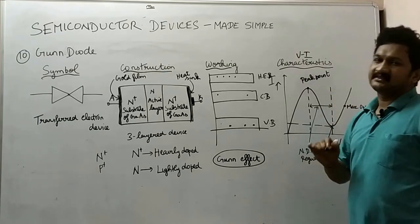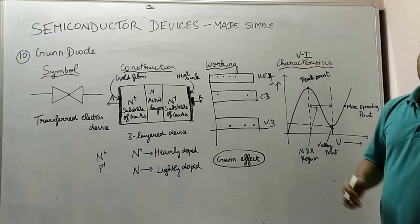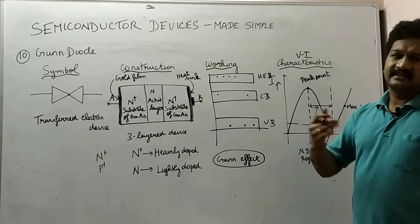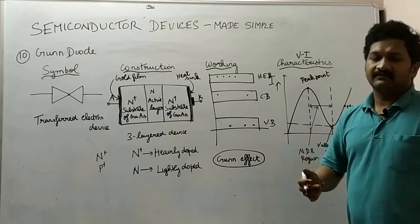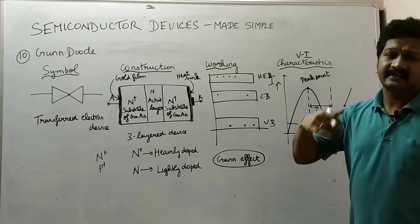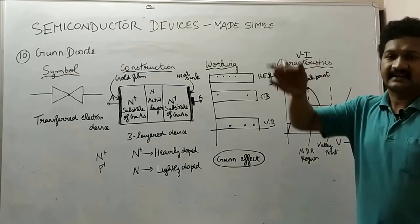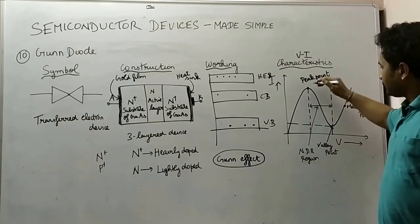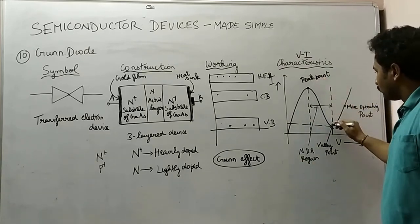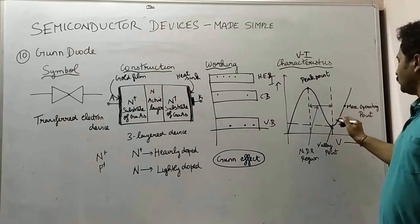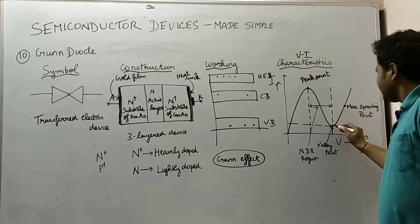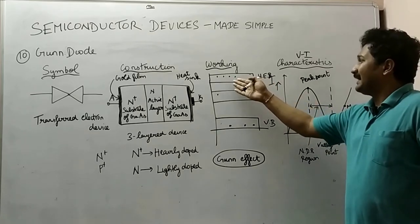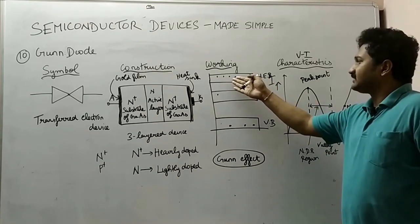The negative dynamic resistance region is defined as the region where when the external voltage is increased, the current decreases. That principle is followed here.